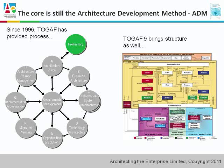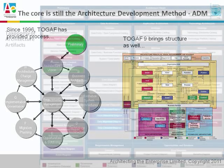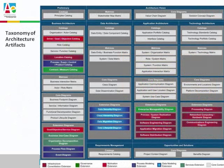Sitting on top of this metamodel is the Taxonomy of Artifacts, which we see here. This is a fantastic tool, which enables us to pick and choose among almost 30 different artifacts, depending on the needs of our stakeholders.